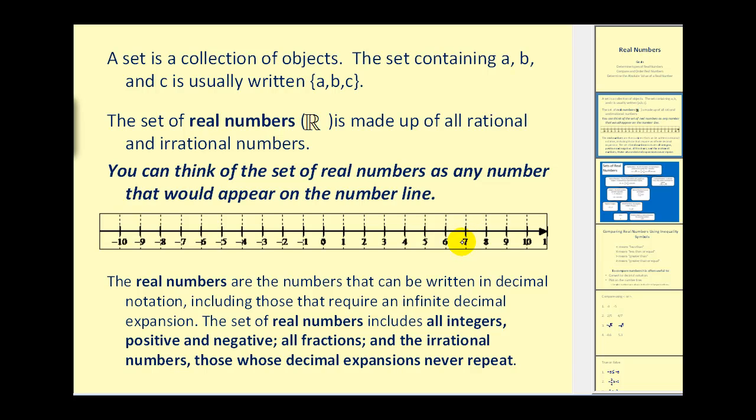The real numbers are the numbers that can be written in decimal notation, including those that require an infinite decimal expansion. The set of real numbers includes all integers, positive and negative, all fractions, and all the irrational numbers, those whose decimal expansions never repeat.